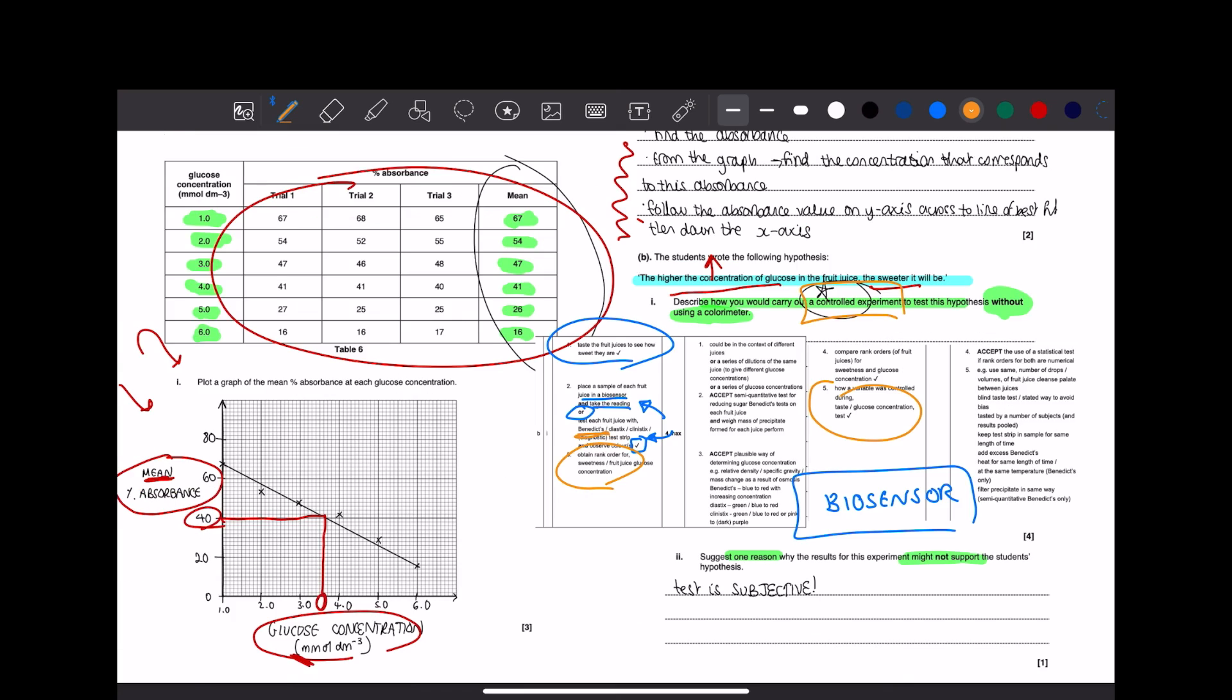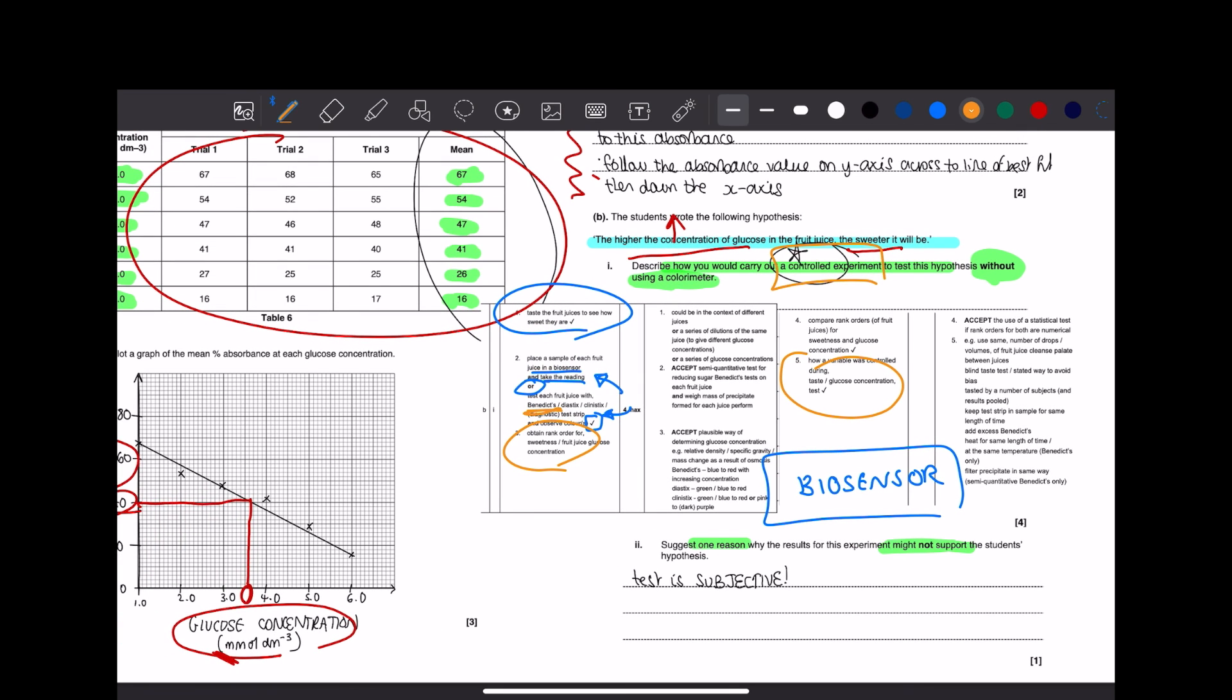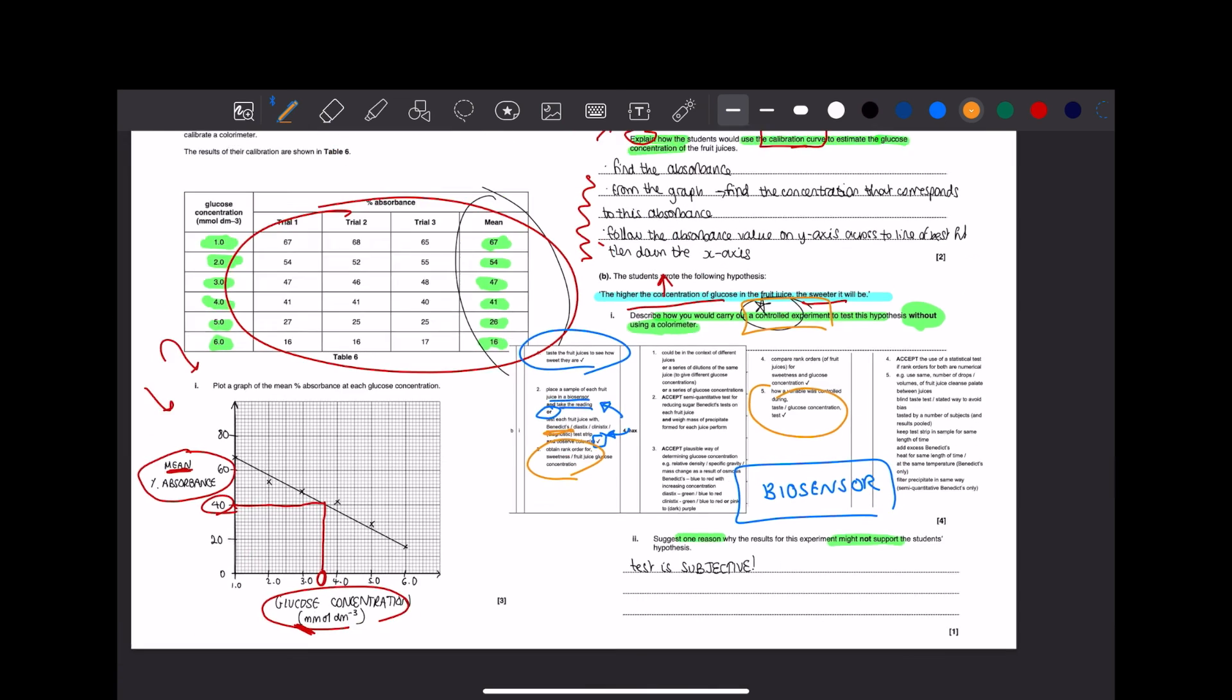The next one says suggest one reason why the results for this experiment might not support the student's hypothesis. It's easy. It's subjective. You're telling me you're tasting some fruit juices and then you're saying this is how sweet it is. How you determine the sweetness of juice A, it's not going to be the same to how I determine it or somebody else does it. So, subjective. If it's not using a quantitative measure like a colorometer and stuff, then it's subjective. But if you're actually using a machine, apparatus stuff, then it would be objective. But that's why I wouldn't really fully support it because it's down to opinions, really.